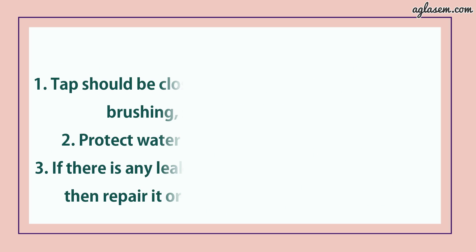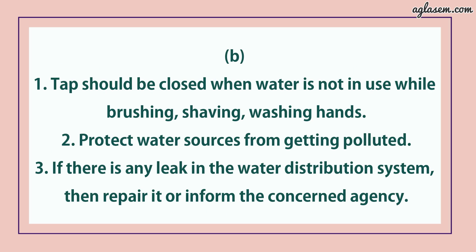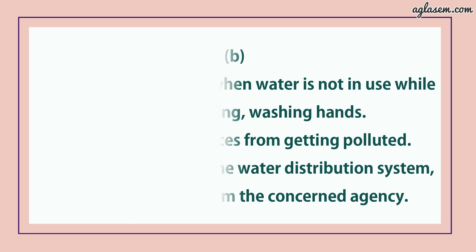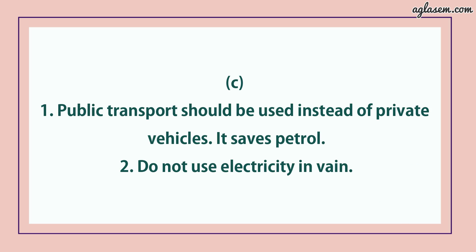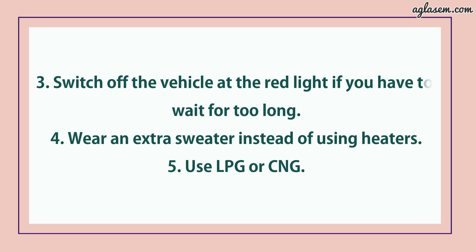For water resources: first, taps should be closed when water is not in use while brushing, shaving and washing hands. Second, protect water resources from getting polluted. Third, if there is any leak in a water distribution system, repair it or inform the concerned agency. For petroleum: first, public transport should be used instead of private vehicles to save petrol. Second, do not use electricity in vain. Third, switch off the vehicle at the red light if you have to wait for too long. Fourth, wear an extra sweater instead of using a heater. Fifth, use LPG and CNG.